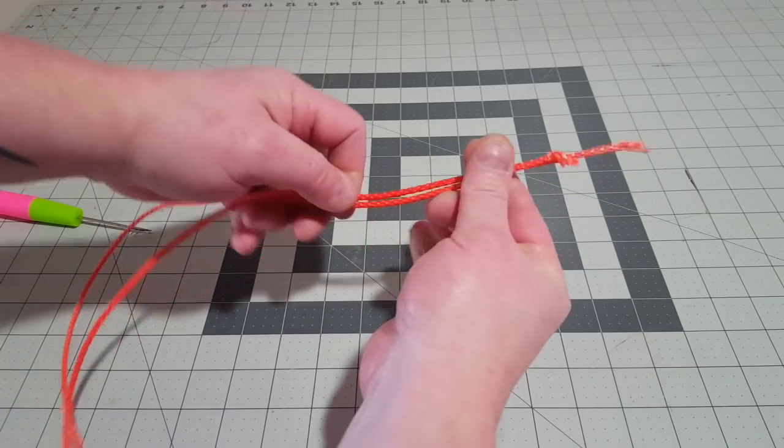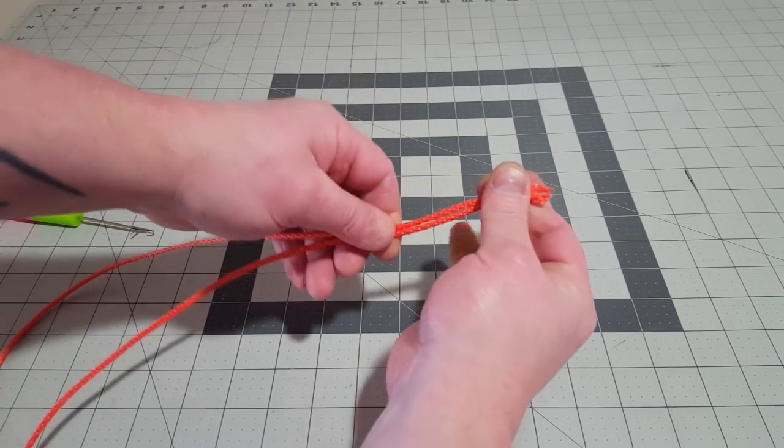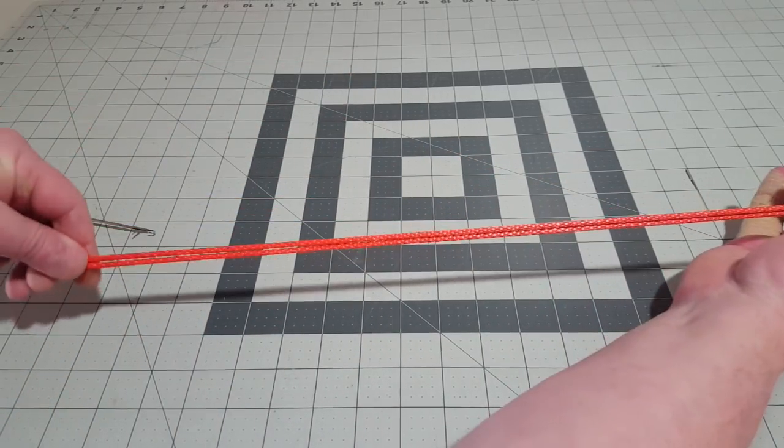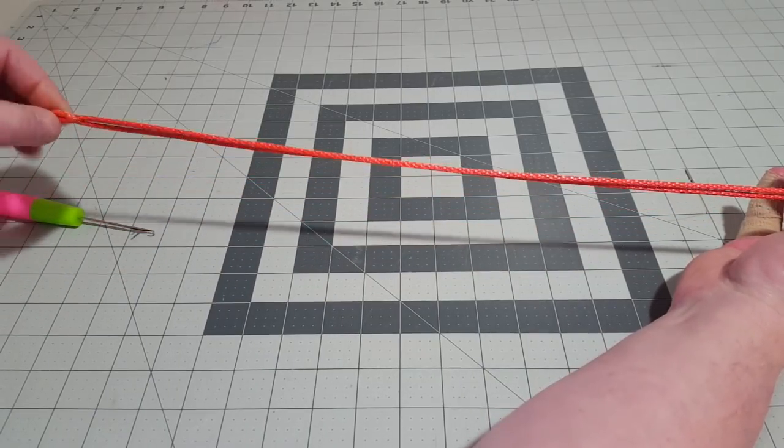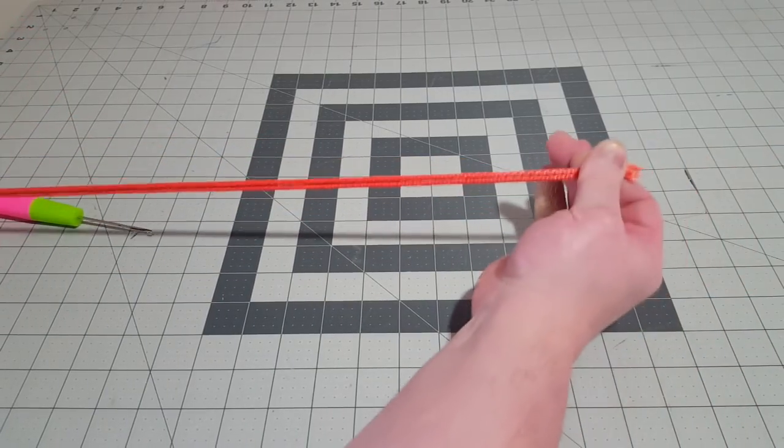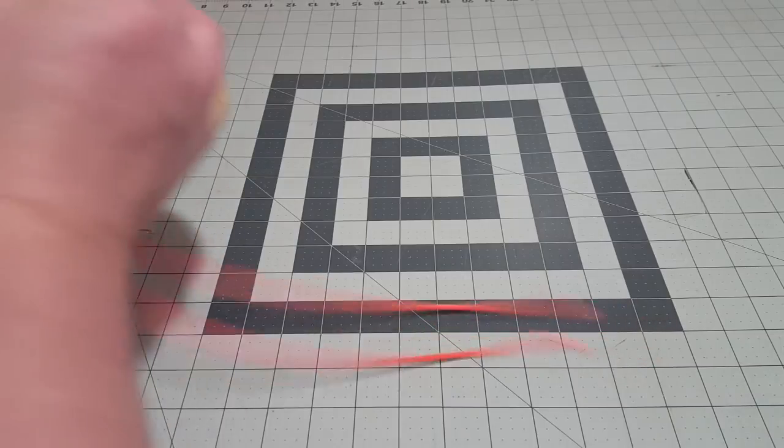Now just take the two ends and bring them so they line up with each other, and then form the bite again. Now you have a nicely shaped noose at the end of your bite and we can do the knot tying part.